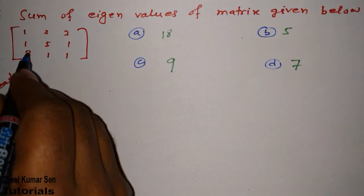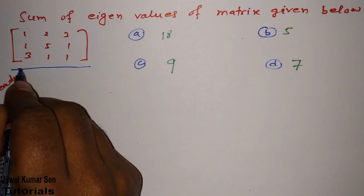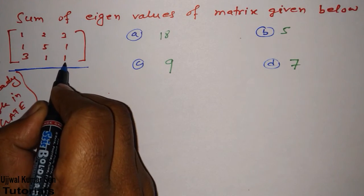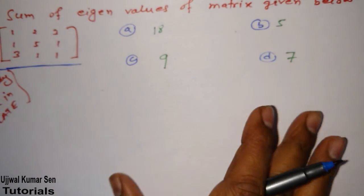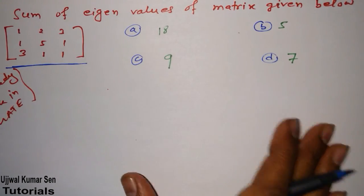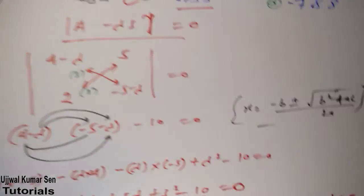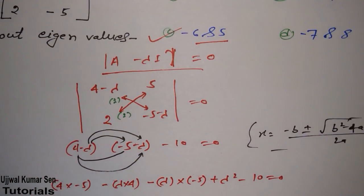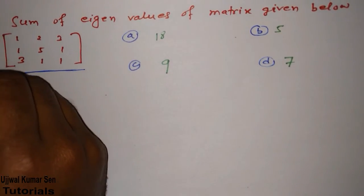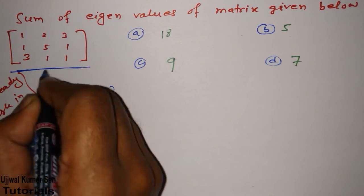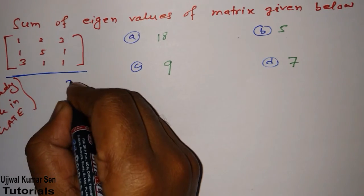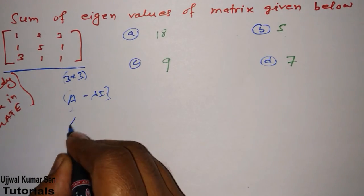We have to find out sum of all eigenvalues of this matrix and mark the right answer which is matching. Now think, if you will follow this step, A minus lambda I, then this will be in cubic form because this is a 3 by 3 matrix.